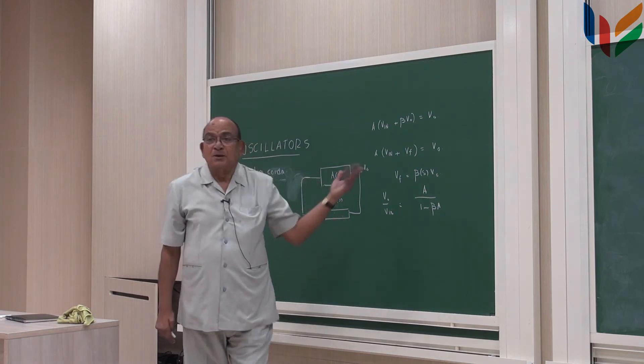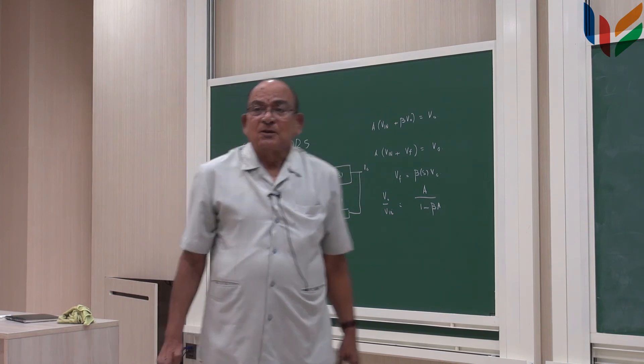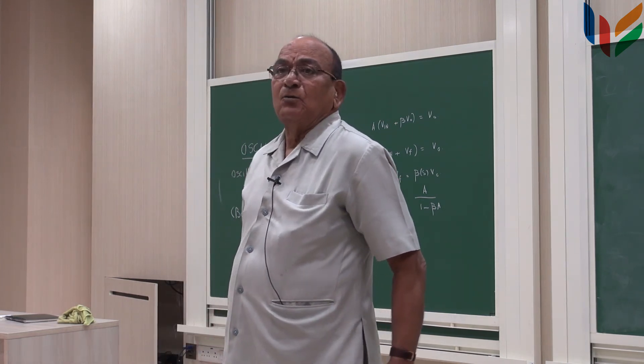So, you can put A here and B there and so on and so forth. But A is usually the amplifier which has a power gain, and beta is a passive network which has no power gain.